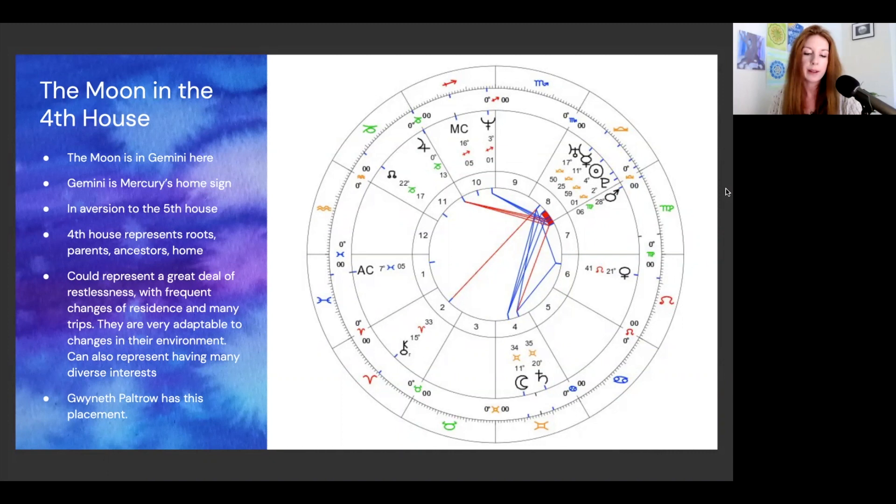It could represent a great deal of restlessness with frequent changes of residence and many trips. People with this placement are very adaptable to changes in their environment. Maybe we see somebody who's done a lot of moving around as a child, and maybe that is then influential on their later creative work. It can also represent having many diverse interests. This is something we associate with Gemini, the twins. It's the ability to have multiple interests or curiosities.